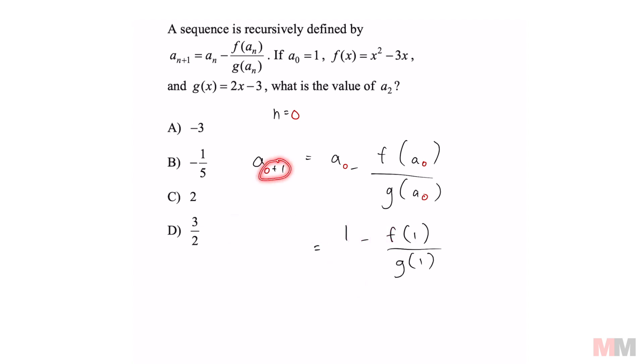And on the left side, 0 plus 1 equals 1. So now we got this information, a sub 1 equals all of this. And once again, all we did was replace the meaning of a sub 0 with 1, because that's what that says.